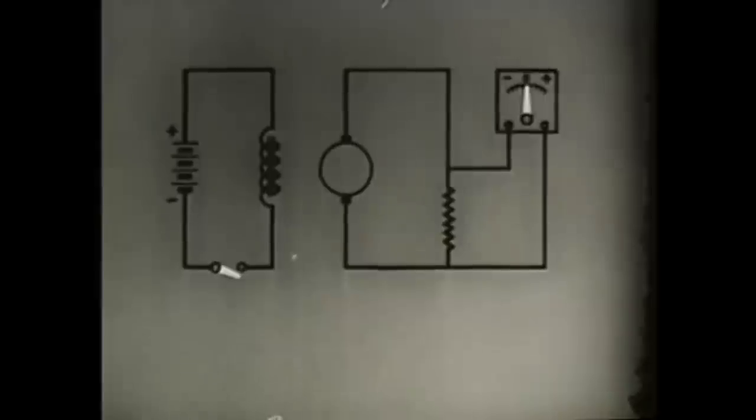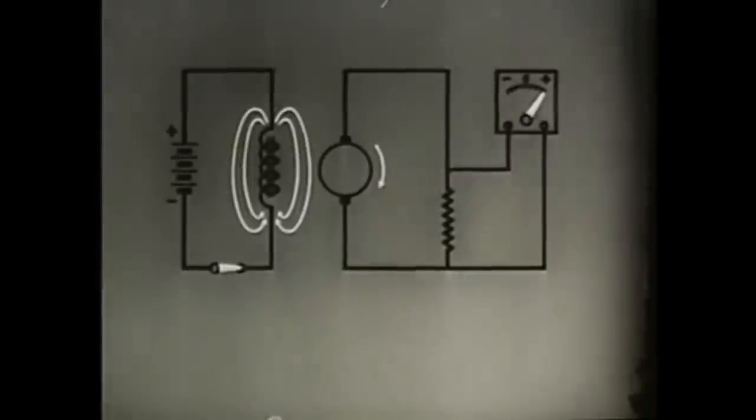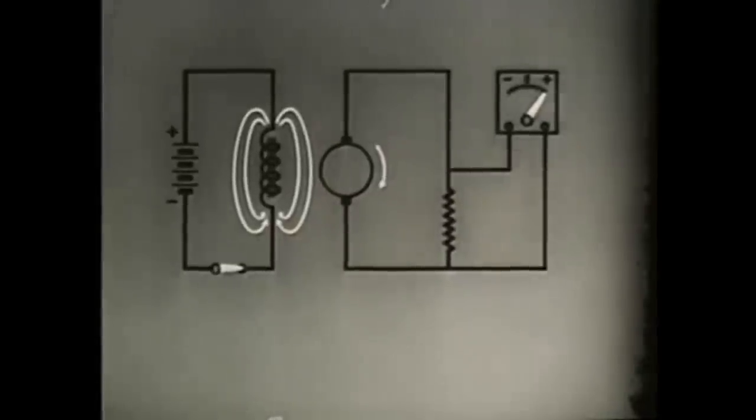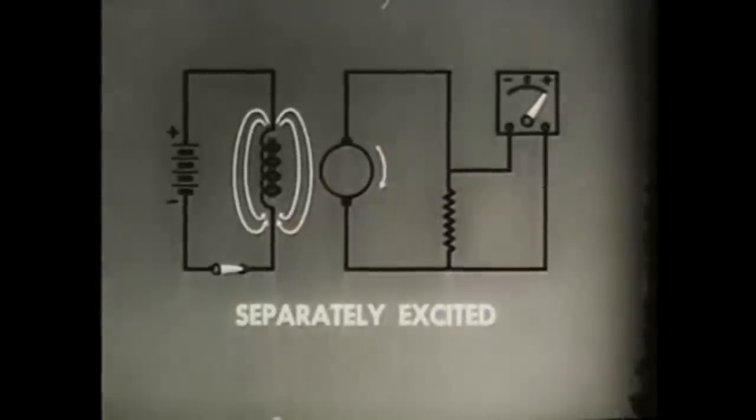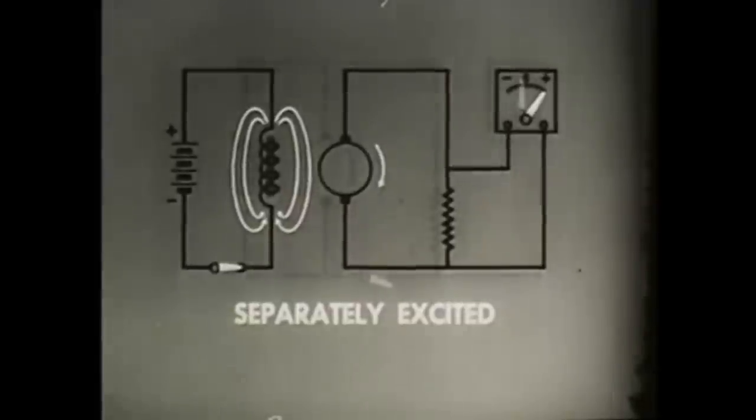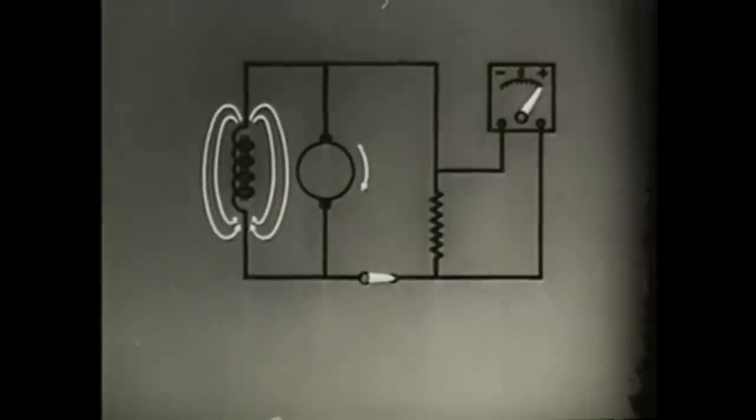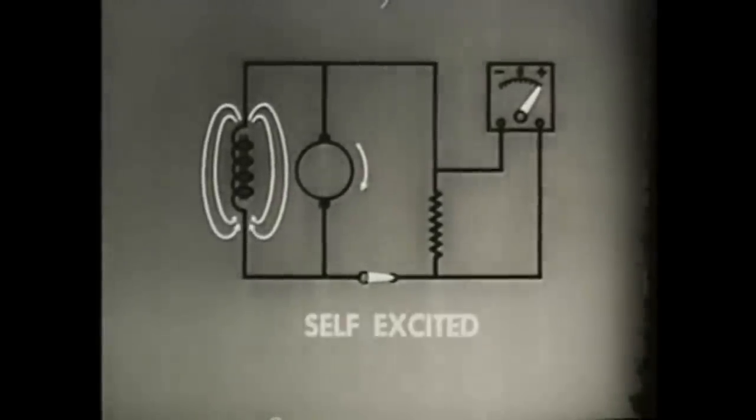The field winding used in this DC generator can be represented by a symbol. The symbol is that of an iron core inductor. Current to excite the field windings can be supplied from an external source. In that case, the generator is classified as separately excited. A small part of the generator's own output can also do the exciting. In that case, it will be a self-excited generator.